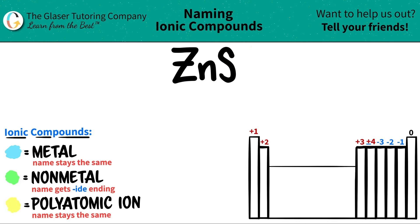Let's just see where they are on the periodic table. So zinc is over here — it's the last element on this side, part of the transition metals, so it's a metal. Sulfur is right below oxygen on the periodic table, somewhere over here, and that's non-metal territory. So sulfur is always going to be a non-metal.